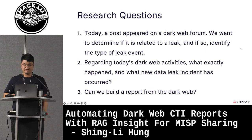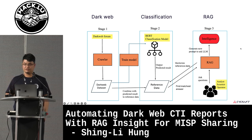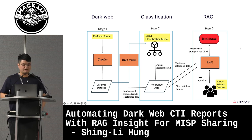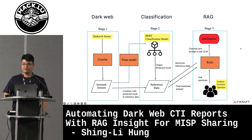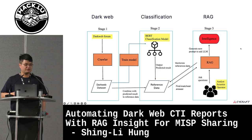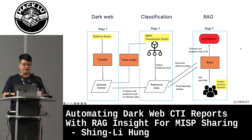Writing the report is time-consuming, so this is our system architecture with three stages. In stage one, we target dark web forums and design a crawler function to collect the forum posts, then create a dark web dataset. In stage two, we use that dataset to train a classification model to determine the leak type — we use the BERT model — and find the embedding of leak posts.